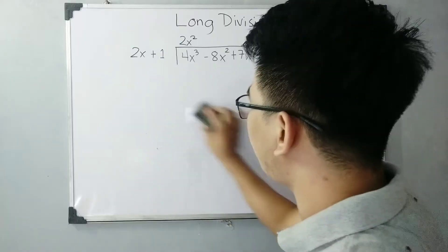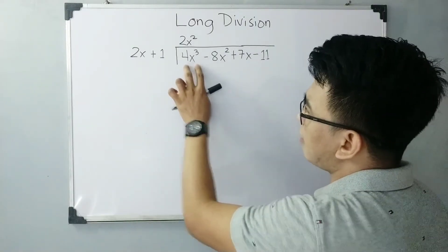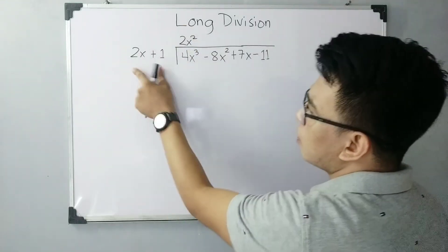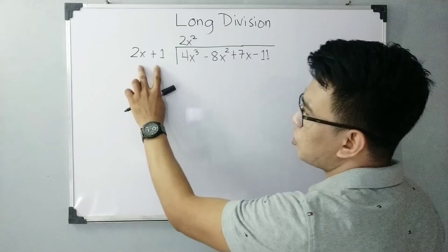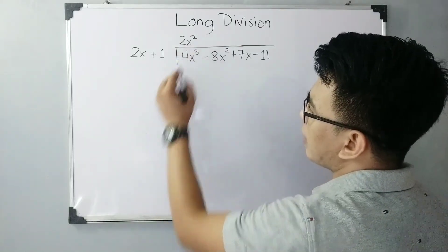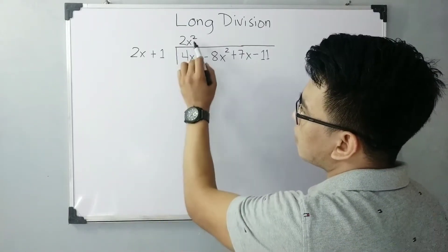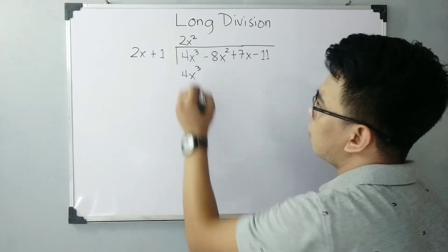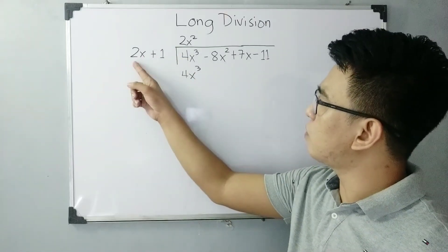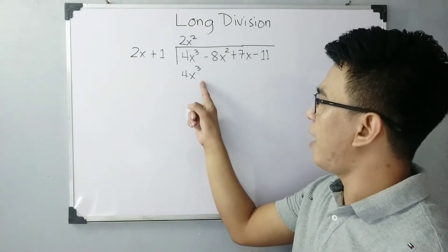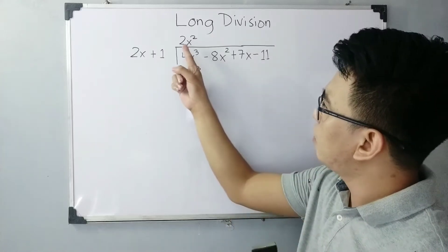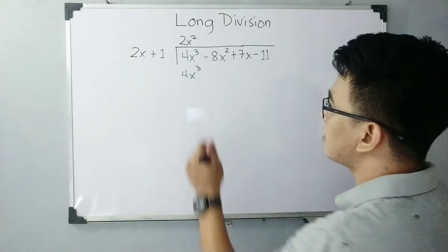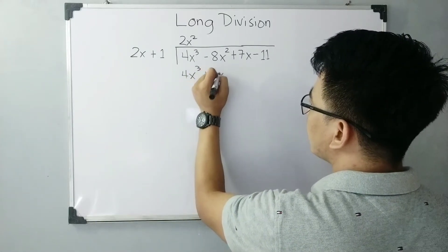The next step, after dividing the first term of your dividend by the first term of your divisor, is to multiply 2x squared by the entire divisor polynomial. So, 2x squared times 2x gives you 4x cubed — because 2 times 2 is 4, and x squared times x is x cubed. Next, multiply 2x squared by 1, and that gives plus 2x squared.